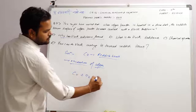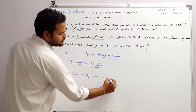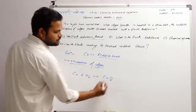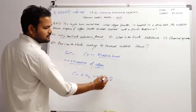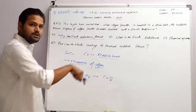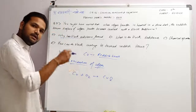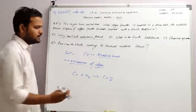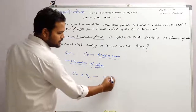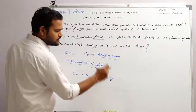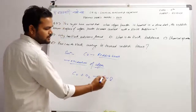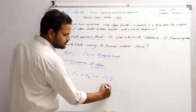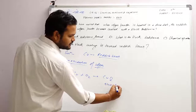Cu plus O₂ gives copper oxide. This is the oxide which was deposited on copper — this black substance on copper. This oxygen gets deposited on copper, and the color will be black.